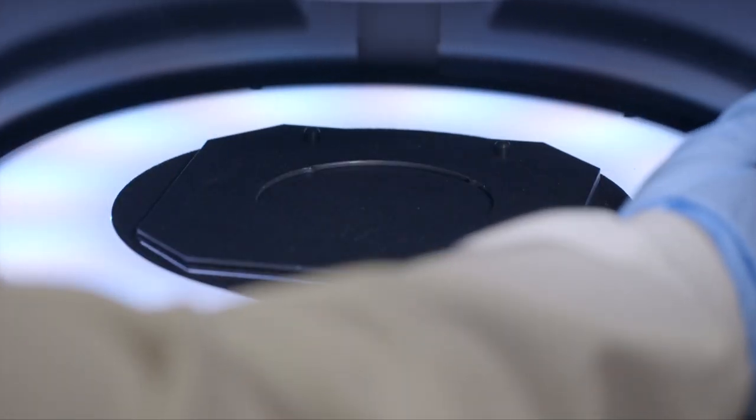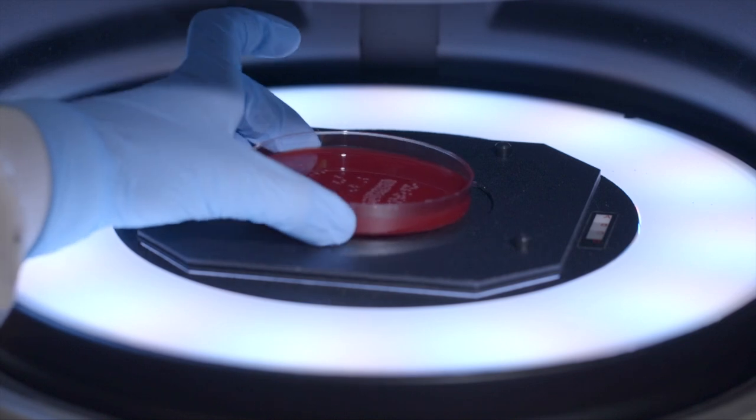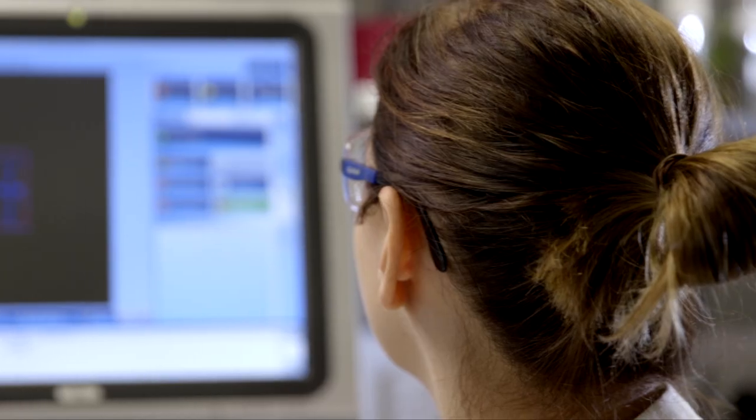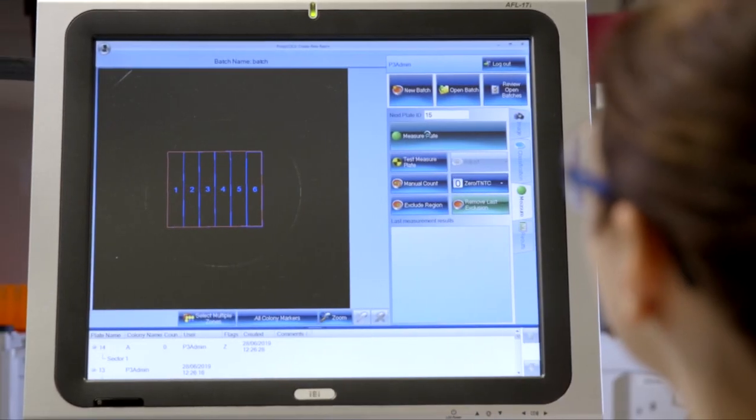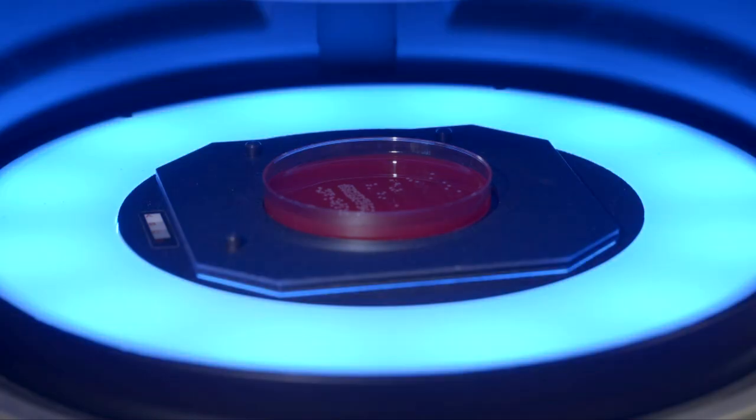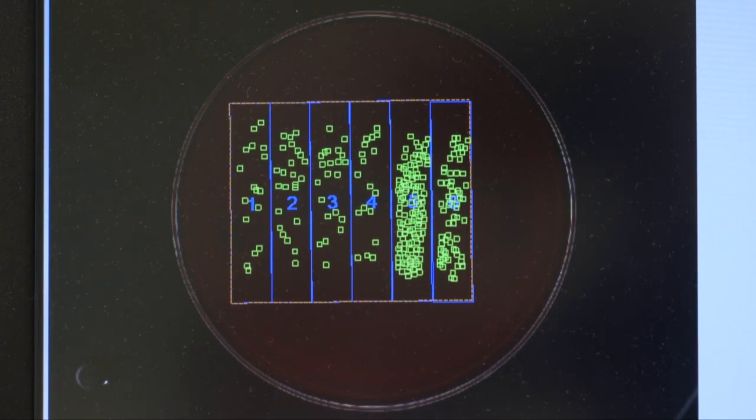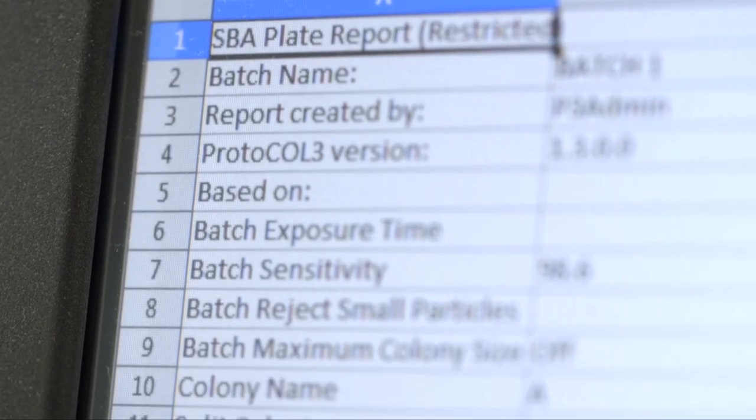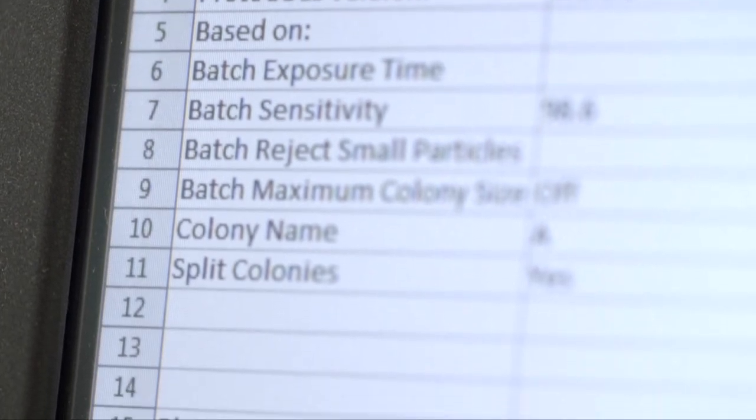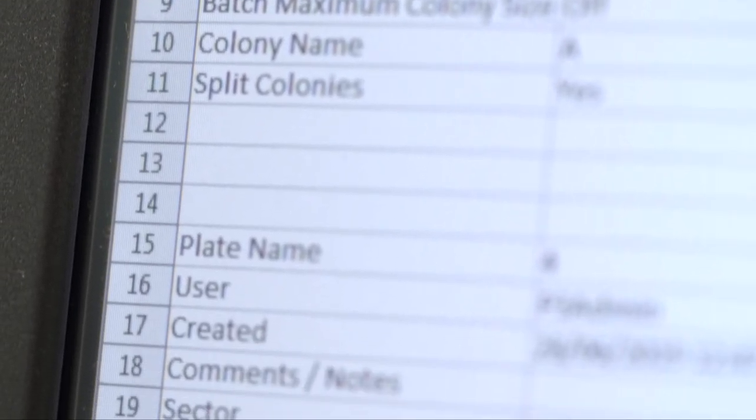To increase the amount of work they could do in a day, the scientists decided to automate their colony counting. They contacted their main collaborator who gave them a personal recommendation for the Protocol 3. They were also attracted to the idea of having a colony counter that could work with a variety of plate layouts and protocols all in one system.